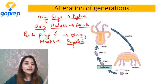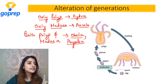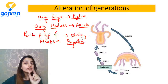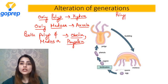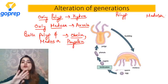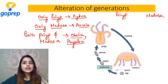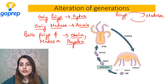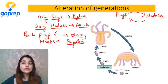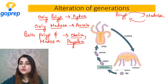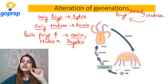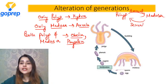Some Coelenterates only polyp - hydra. Kuch Coelenterates only medusa - Aurelia jellyfish. Kuch jo dono form mein exist karte hain - that is Obelia and Physalia. Ye jo dono forms mein hain - polyp aur medusa - they keep on alternating. Agar polyp medusa mein convert hona chahta hai, then the type of reproduction they have to do is asexual reproduction. Medusa will convert to polyp by sexual reproduction.